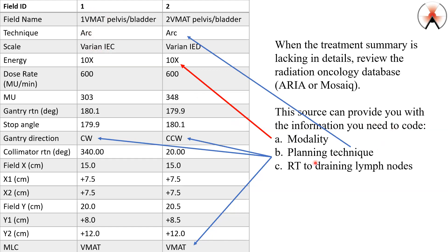But if you want further confirmation, look at gantry direction — that's that big portion of the machine. If the patient is lying on the table and I have the gantry at zero degrees, it's right over the patient's head. I can rotate that — remember, 180 degrees in either direction. The gantry rotation information is telling me in which direction the gantry is going to be rotated for the first field of treatment.